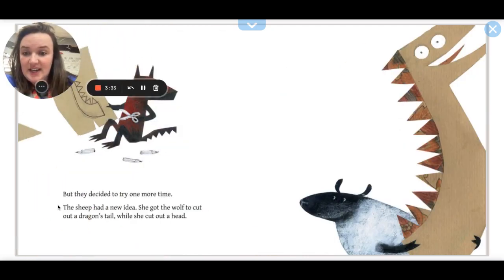They decided to try one more time. The sheep had an idea. She got the wolf to cut out a dragon's tail while she cut out a head.